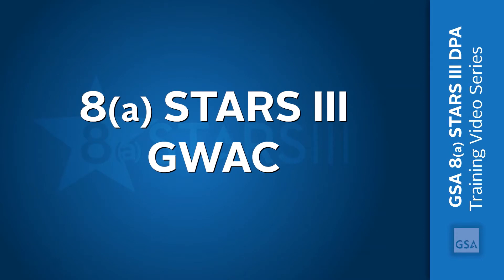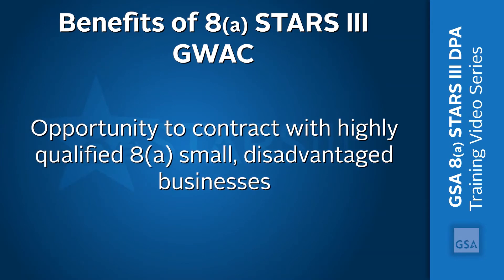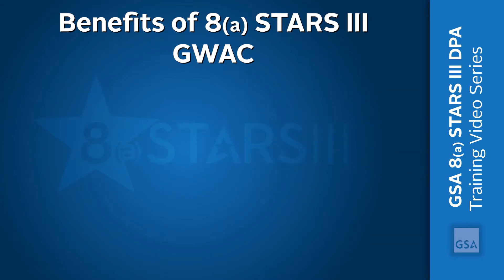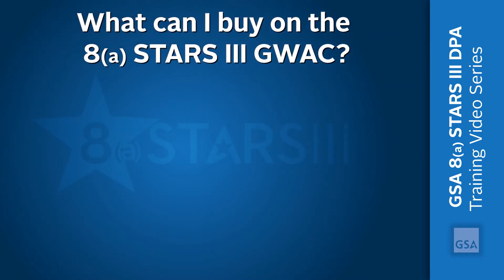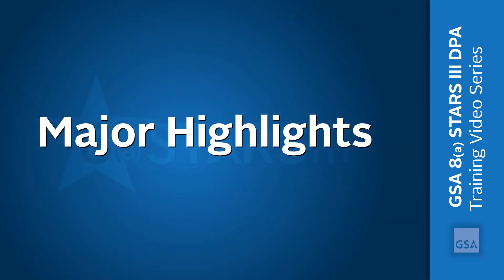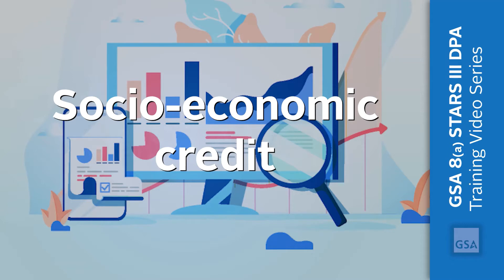Now, let's look at the benefits of GSA's 8STARS III GWAC. GSA's 8STARS III GWAC offers the unique opportunity to contract with highly qualified 8STARS small disadvantaged businesses. Using GWACs is a faster alternative to time-consuming and costly full and open competitions. GSA also offers training and customer support to help you with contracting rules and regulations. The 8STARS III GWAC is for IT services and IT services-based solutions. You may purchase hardware, software, and related supplies as part of an integrated IT services-based solution. Leasing by the government is prohibited under GSA's GWACs. After you've made the award, agencies receive 8A socioeconomic credit by reporting contract actions in the Federal Procurement Data System's FPDS.